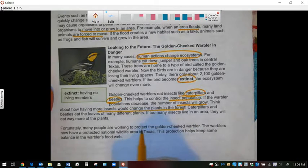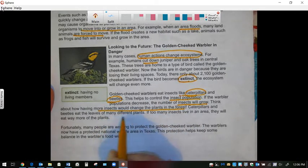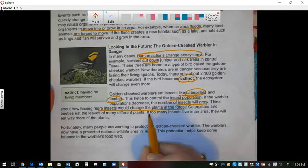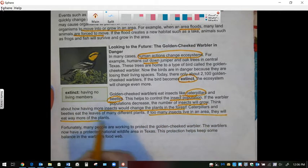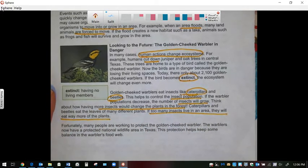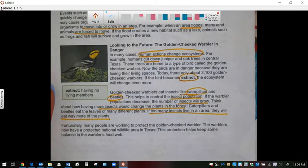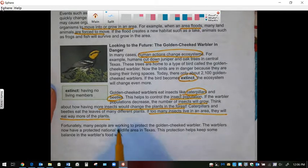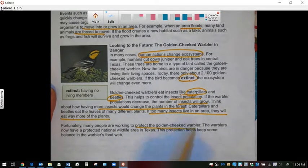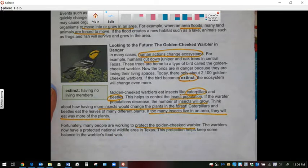And think about having more insects would change the plants of the forest. Caterpillars and beetles eat the leaves of many different plants. If too many insects live in the area, they will eat away more of the plants. And fortunately, people are trying to work to protect the golden-cheeked warbler.